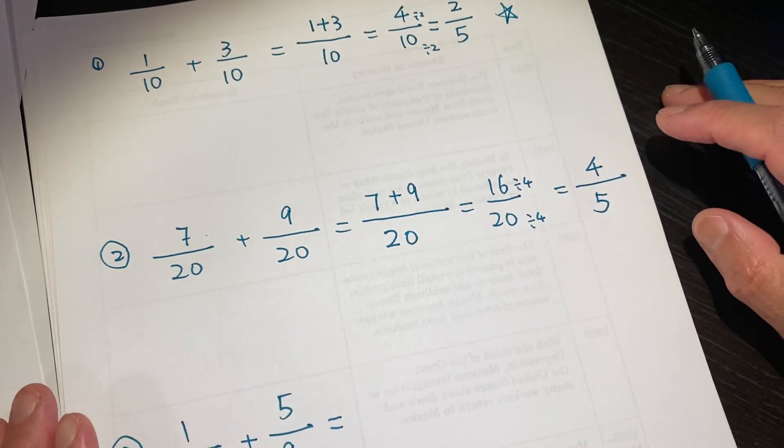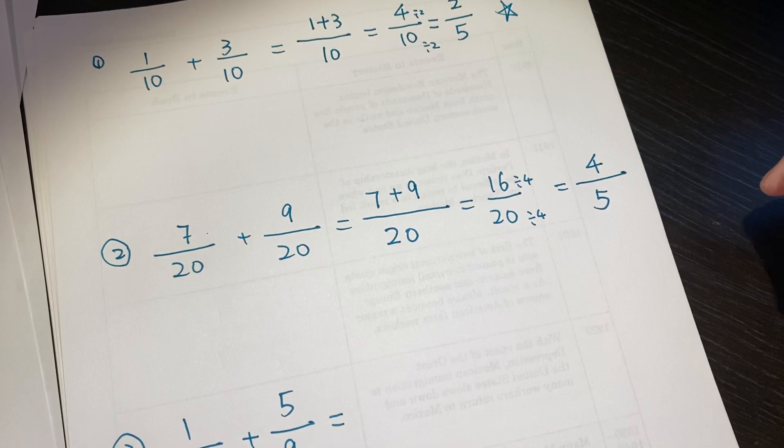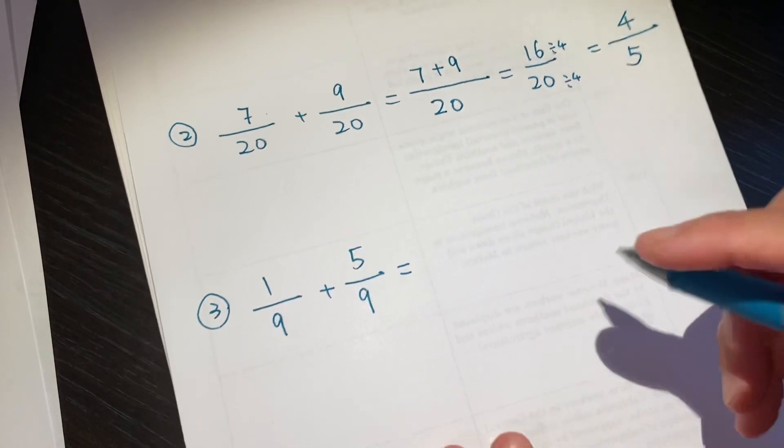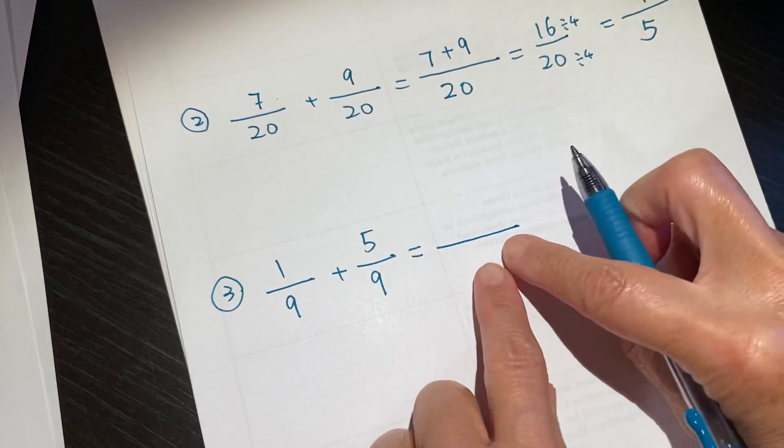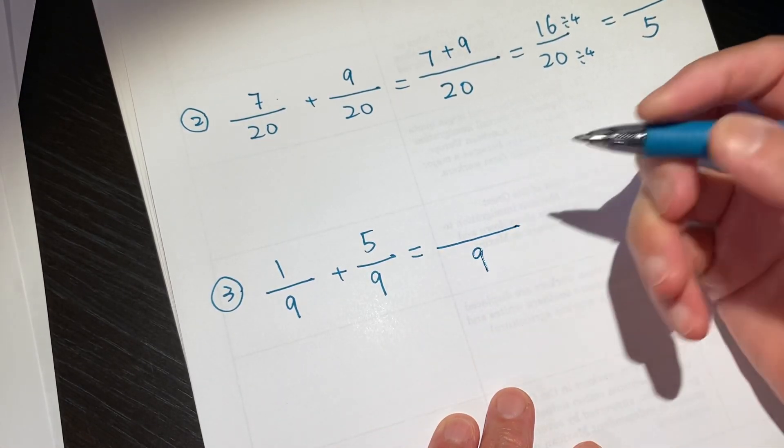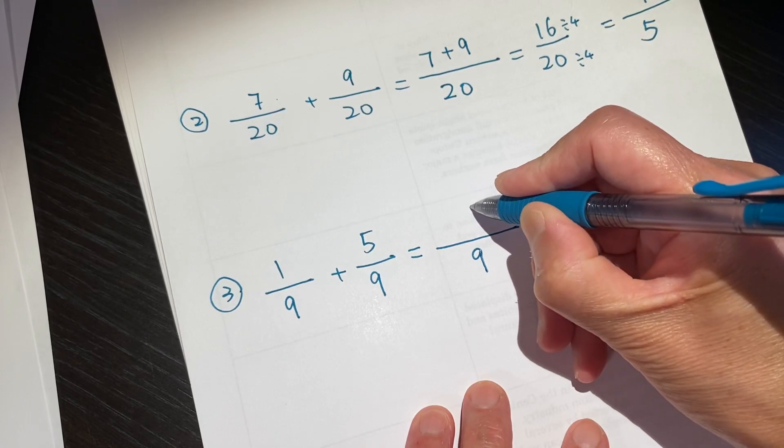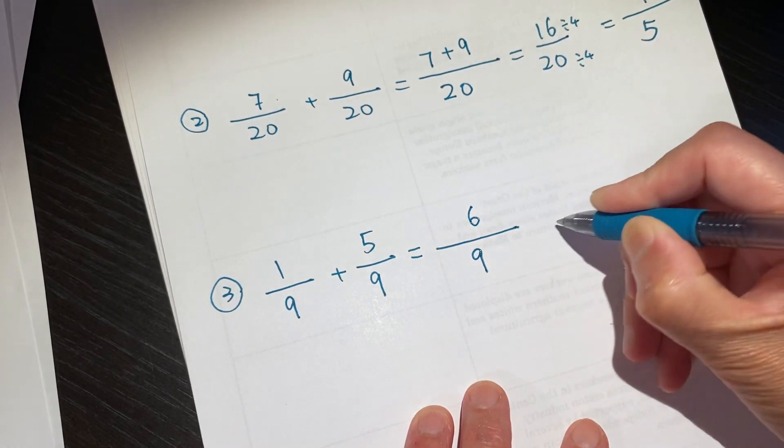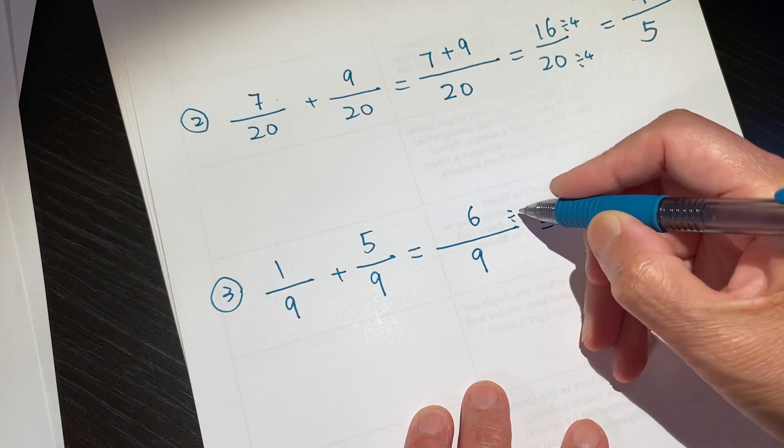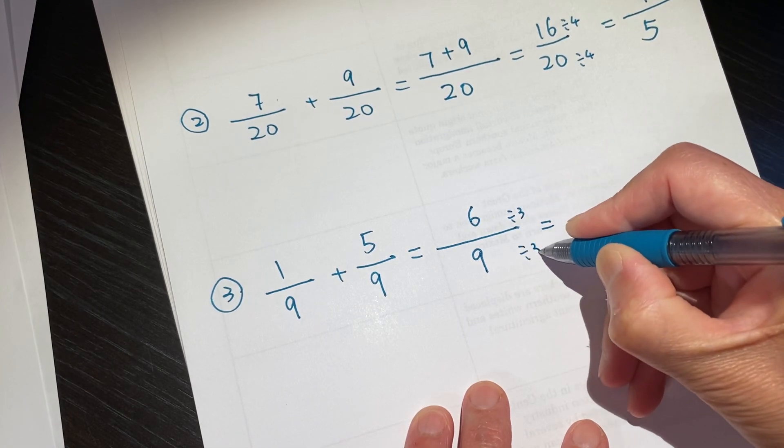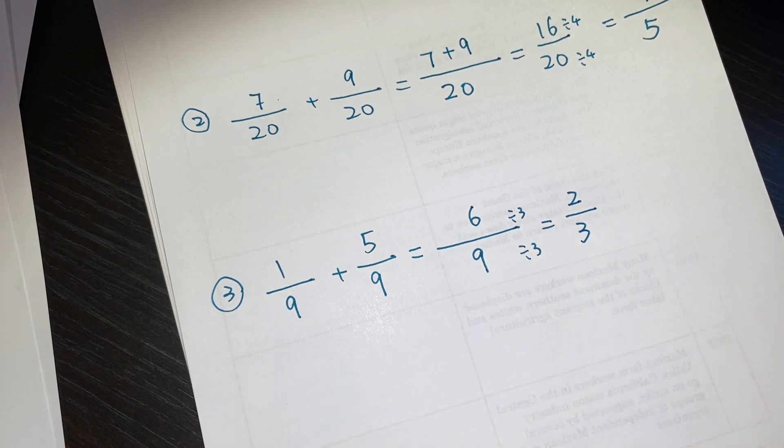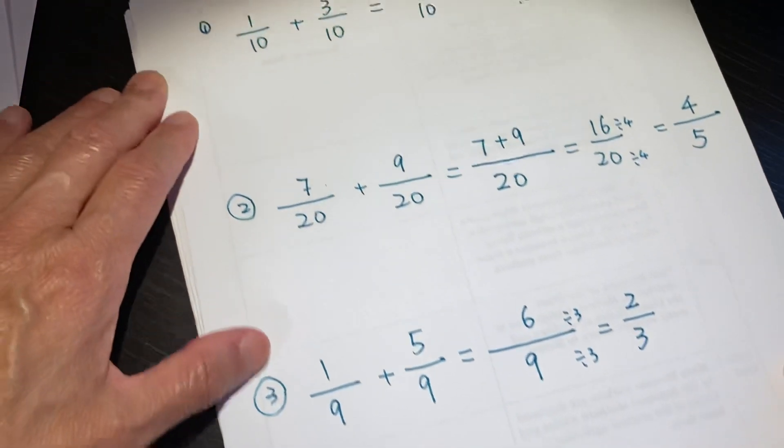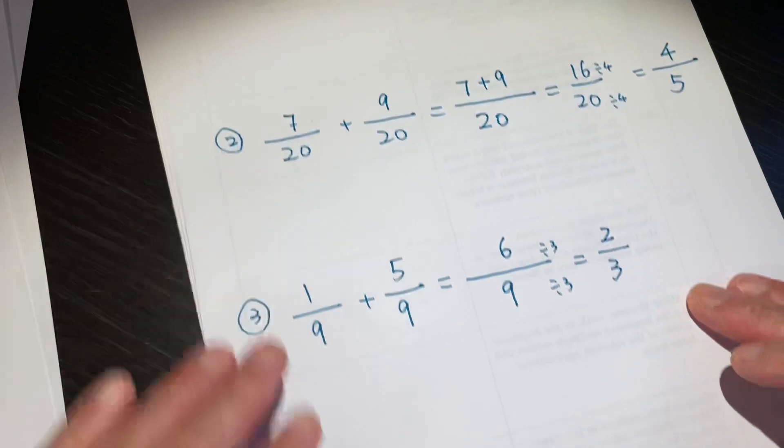And this is the simplest. We cannot reduce any further. That is good. The third one, the denominator is the same number. The top number, 1 plus 5, is 6, both divided by 3. So 2 over 3, and that is it. So if you can do this, you know how to do it.